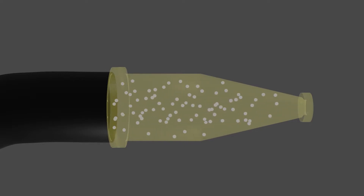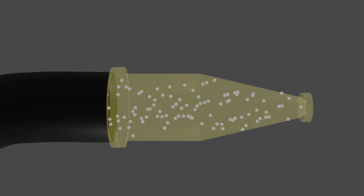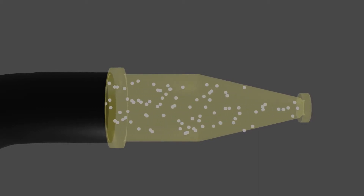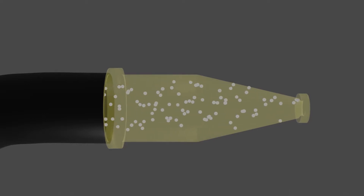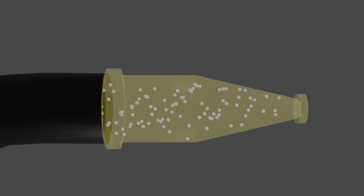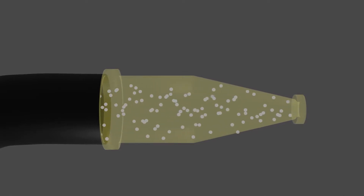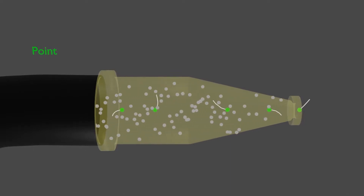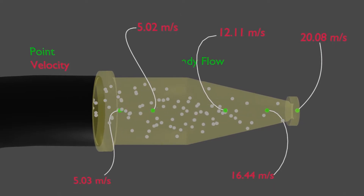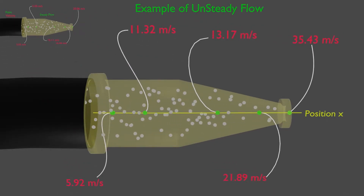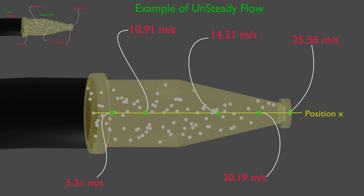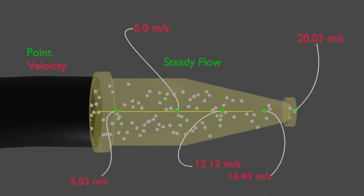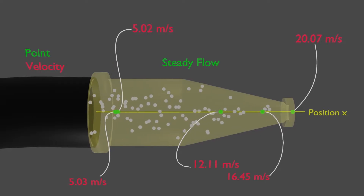Let us visualize fluid acceleration using the nozzle of a garden hose. To understand its acceleration, it is very important to know the difference between steady and uniform flow. When the velocity of a fluid at a point does not change with time, we refer to the flow as steady flow. And when the velocity does not change from one position to the next, it is referred to as uniform flow.